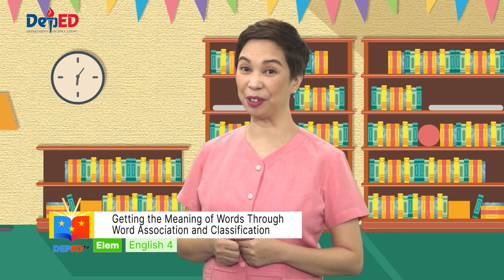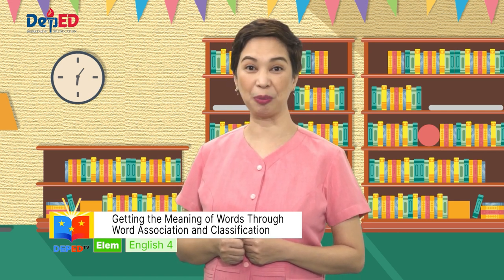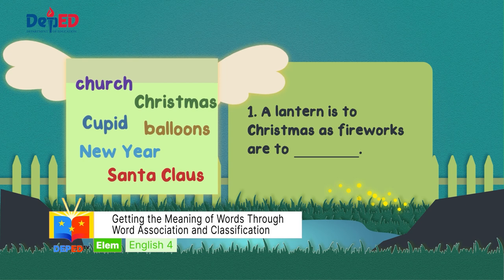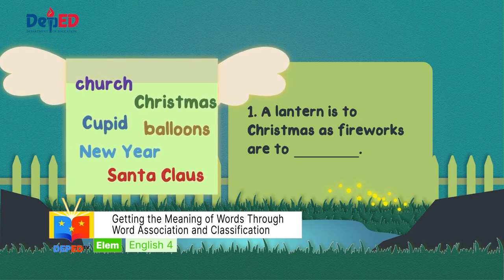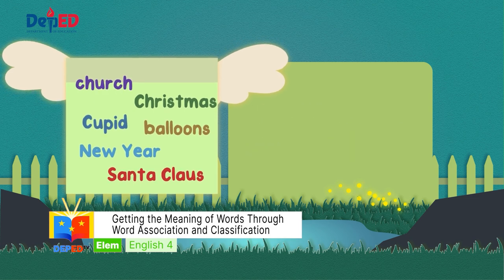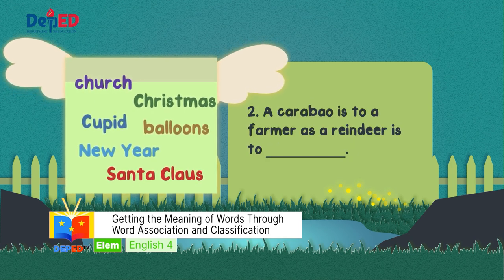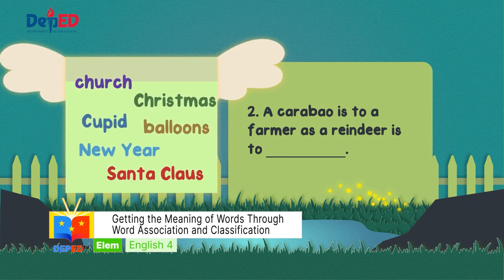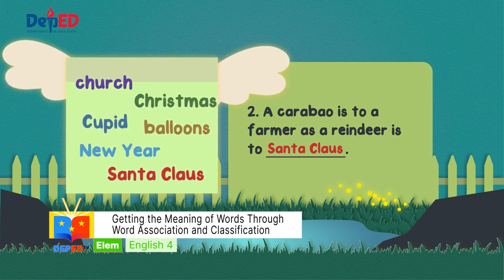Here is some help to better understand our lesson. You can choose your answers from the gift box. Number one: a lantern is to Christmas as fireworks are to blank. The answer is New Year! Number two: a carabao is to farmer as a reindeer is to blank. If your answer is Santa Claus, then you are correct. Reindeer can be paired with Santa Claus.